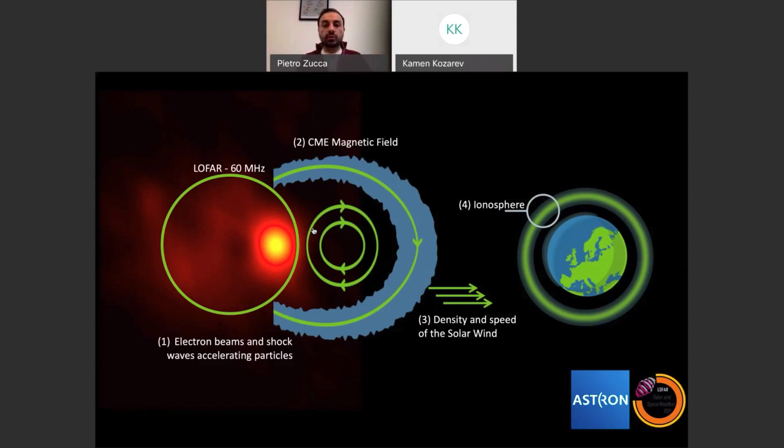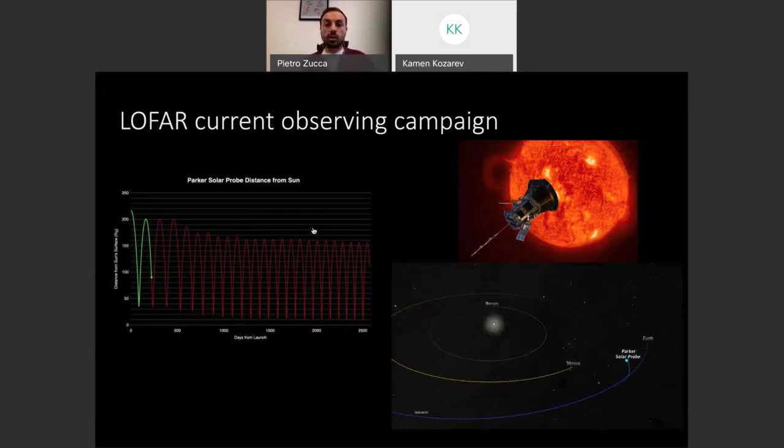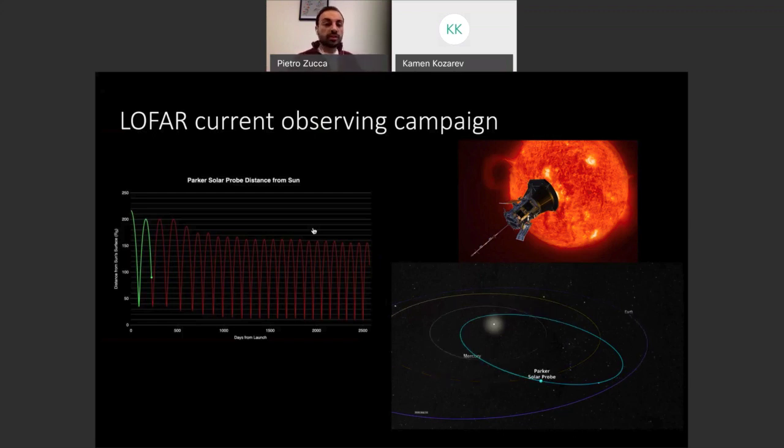We have a LOFAR current campaign that is going on to the sun every time that this new satellite called Parker Solar Probe arrives close to the sun. It does elliptical orbits that repetitively every several months go to what we call the perihelion, so when the orbit is very close to the sun. At the time that Parker Solar Probe arrives close to the sun, we start observing the sun, the heliosphere, and the ionosphere with LOFAR. During this campaign we recorded many data sets.